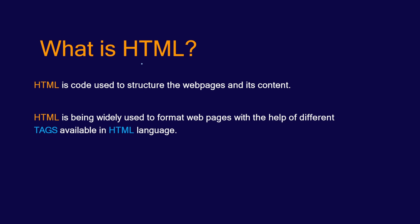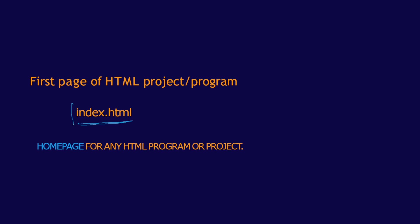So what is HTML? HTML is a code used to structure web pages and their content. HTML is widely used to format web pages with the help of different tags. The first page of any HTML project or program is always index.html. Whenever you are creating a new program or project, always remember the file should be named 'index' with the .html extension. All HTML pages will have the .html extension, and the home page for any HTML project is index.html.